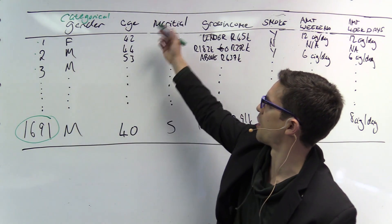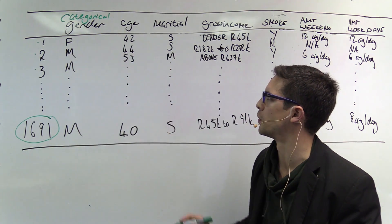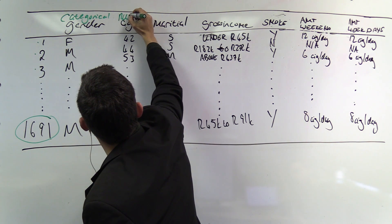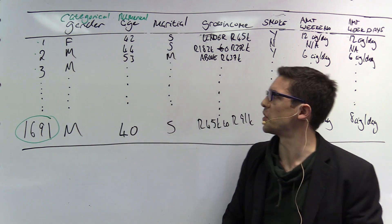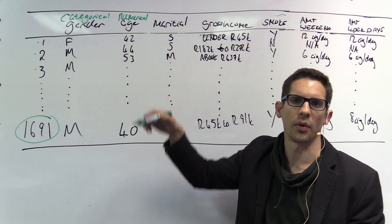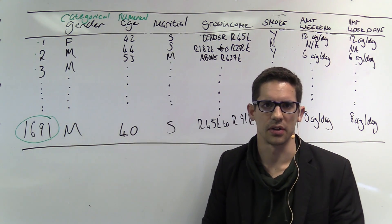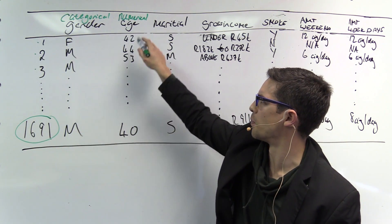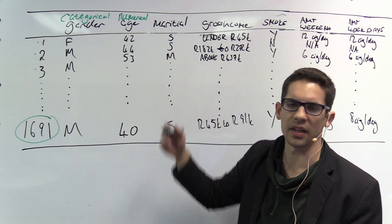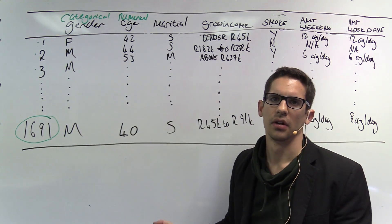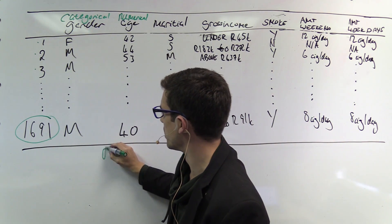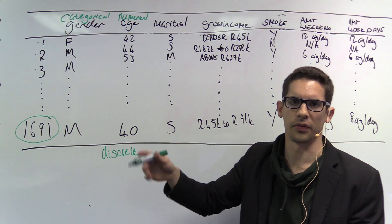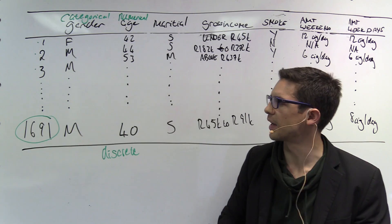Next is age. The values are 42, 44, 53, 40 — these are clearly numbers, so age is numerical. Is it continuous or discrete? Age can technically be measured as continuous — you could say 31.5 years old — but in this case we only see round integers with no decimal values. So we conclude this is numerical discrete, since values are rounded to the nearest integer.